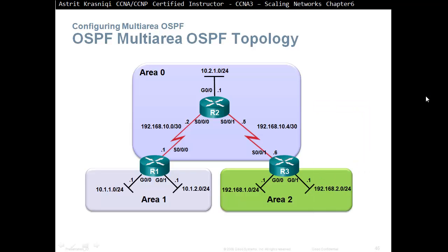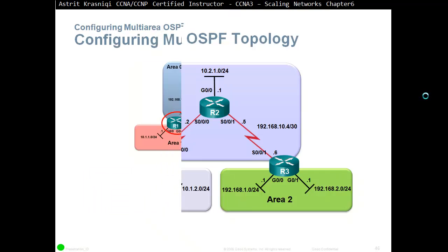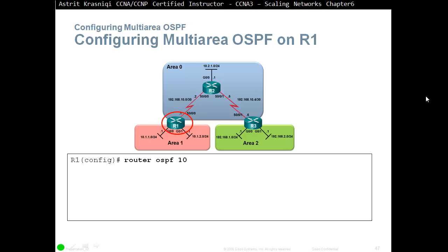This is the topology that we are going to configure. You can pause the video and write the topology on a piece of paper. To configure OSPF Multi-Area, first we go to Router 1. In the global configuration mode we say 'router ospf 10'.